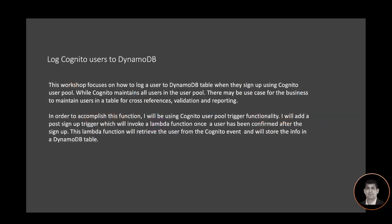To summarize the use case: this workshop focuses on how to log a user to a DynamoDB table when they sign up using a Cognito user pool. Cognito maintains all users in the user pool, but there may be a use case for the business to maintain users in a table for cross-reference, validation, and reporting. I'm using Cognito user pool trigger functionality — a post signup trigger that invokes a Lambda function once a user is confirmed. The Lambda function retrieves the user from the Cognito event and stores the info in a DynamoDB table.